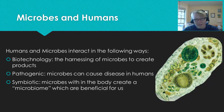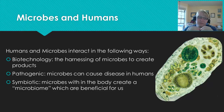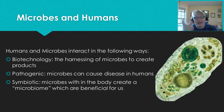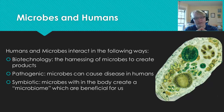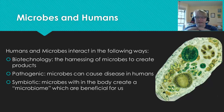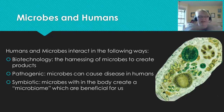Now let's wrap up this topic with one more thing I want to overview: how humans and microbes interact. We have three main categories to talk about — biotechnology, pathogenic microbes, and symbiotic microbes. Biotechnology is where we harness microbes to help produce things for us. Pathogenic microbes cause disease in humans, such as food-borne illnesses or blood-borne pathogens. And symbiotic microbes help our bodies function the way they do.